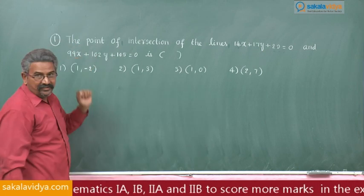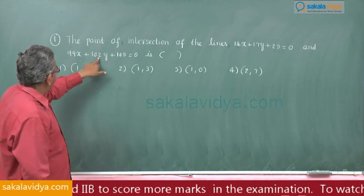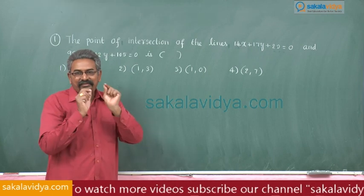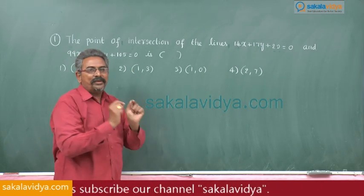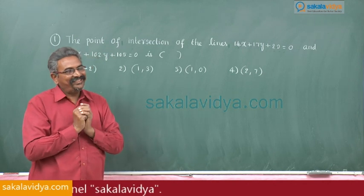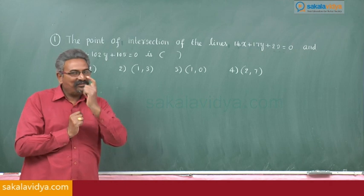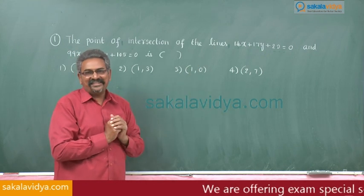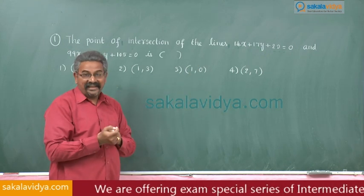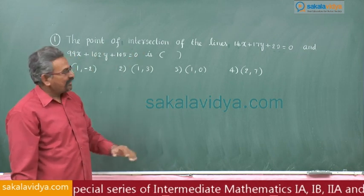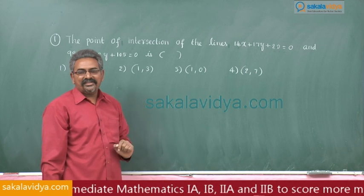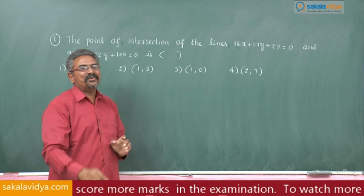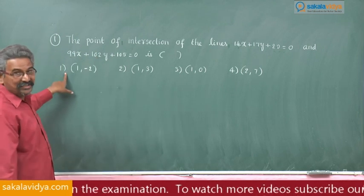Now see the second equation: 99 + 3 is 102, 102 + 3 is 105. They are also in arithmetic progression. If the coefficients are in arithmetic progression, we have one shortcut. Using that shortcut this problem can easily be solved within a fraction of a second. The answer is: if the coefficients are in arithmetic progression, always that linear equation passes through (1, -2). Option is first, that is all.